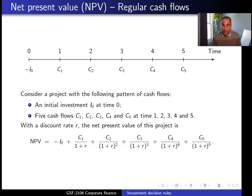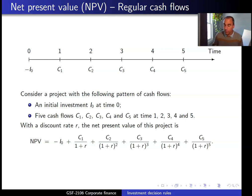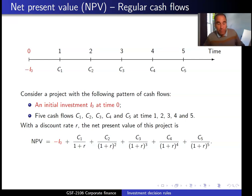Here is an example of a project with regular cash flows. There is an initial investment at time zero and five cash flows — C1, C2, C3, C4, C5 — at times one through five. The net present value of this project is minus the initial investment at time zero, plus the discounted values of each cash flow.